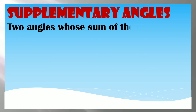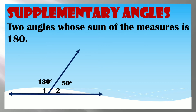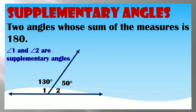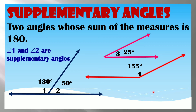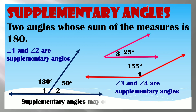Supplementary Angles are two angles whose sum of measures is 180 degrees. Angle 1 and Angle 2 are supplementary angles since their sum is 180. Angle 3 and Angle 4 are also supplementary angles. Supplementary angles may or may not be adjacent — they just need to have a sum of 180.